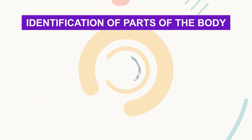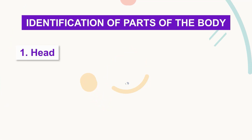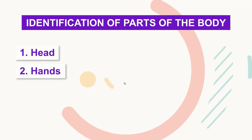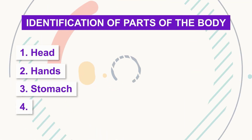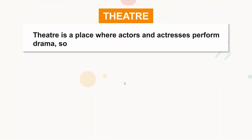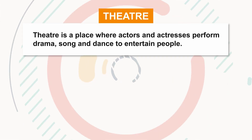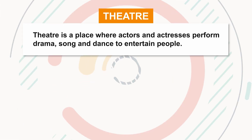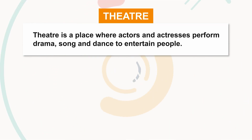Identification of parts of the body: 1. Head, 2. Hands, 3. Stomach, 4. Legs. Theatre is a place where actors and actresses perform drama, song, and dance to entertain people.